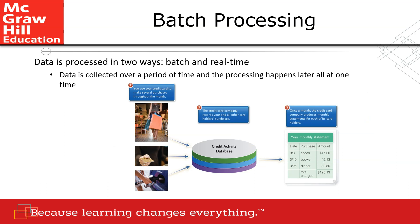Data is processed in two ways: batch processing and real-time processing. When data is collected over a period of time and processing happens later all at once — for example, like a credit card company — this is called batch processing. If you use your credit card to buy items in a store or pay bills, at the end of the month you will get a monthly statement. That is how batch processing works.